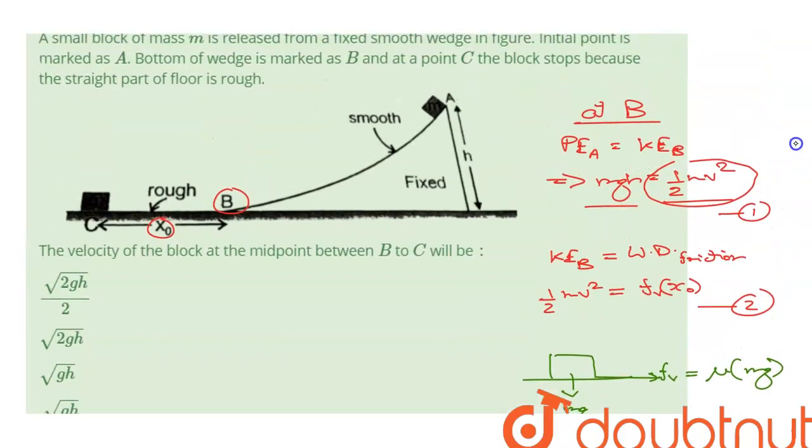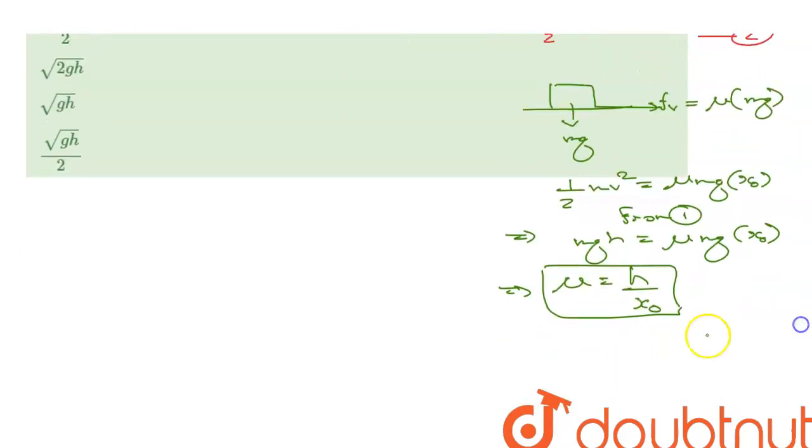Now at the midpoint, the displacement will be equal to x0 by 2. The frictional force is a constant, so it would be mu times Mg.